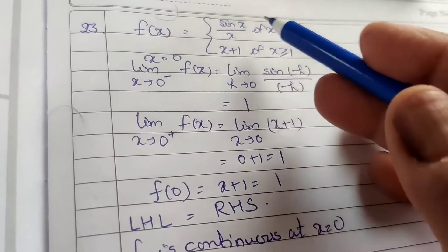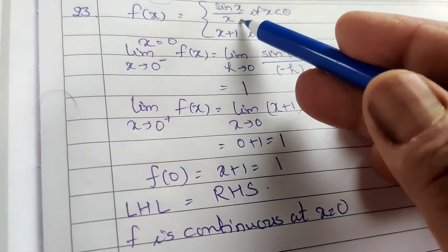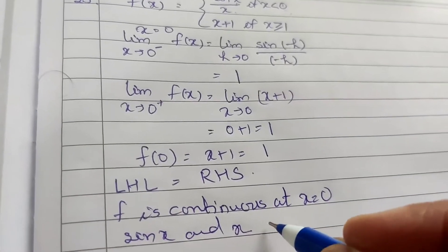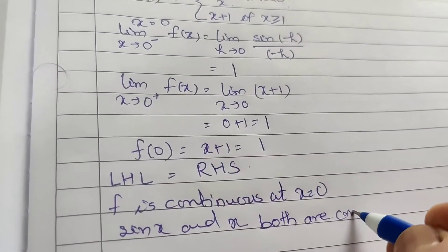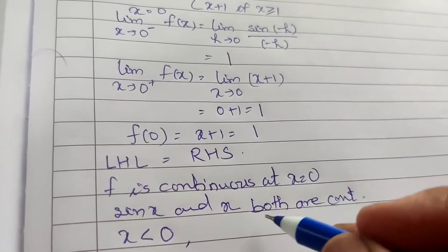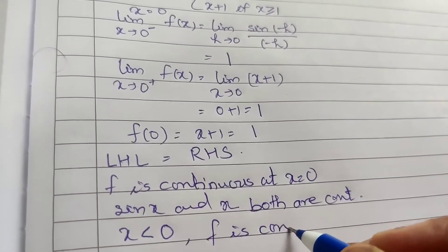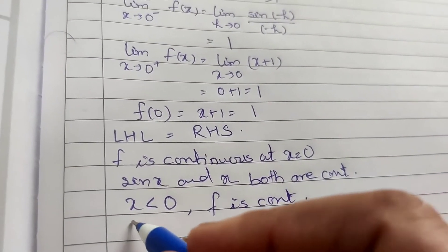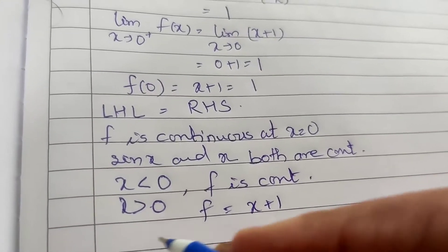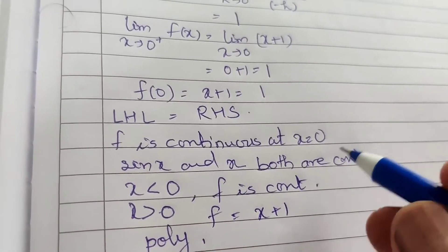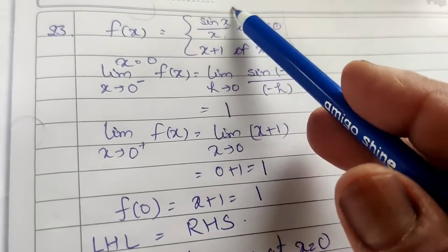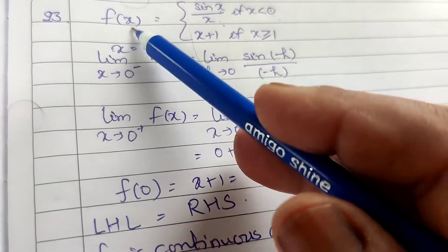At x less than 0, the function is sin x upon x. Since sin x is a continuous function and x is also a continuous function, and both are continuous at x less than 0, the function sin x upon x is continuous for x less than 0. When x is greater than 0, the function is x plus 1, which is a polynomial. A polynomial is always continuous, so f is continuous for x greater than 0. Therefore, f is continuous at every point — there are no points of discontinuity.